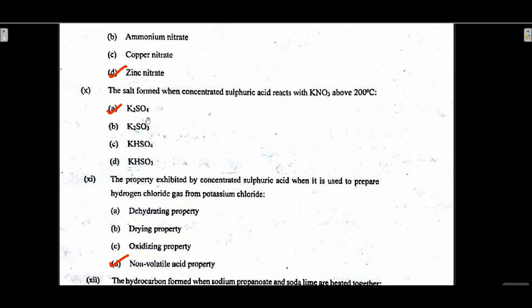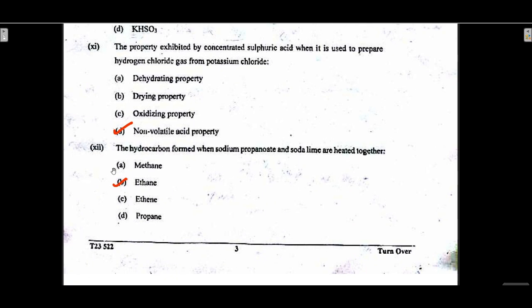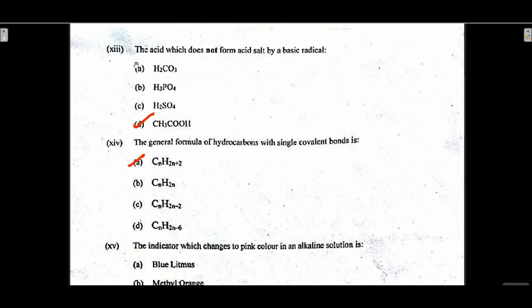Question 8 option B — concentrated sulfuric acid. Question 9 option D — zinc nitrate. Question 10 option A — potassium sulfate. You have to understand this is a method to produce nitric acid; above 200 degrees Celsius it will form potassium sulfate, and if below that temperature it would have been potassium bisulfate.